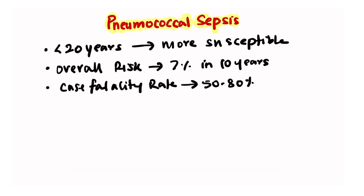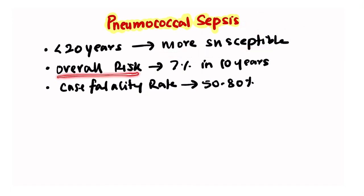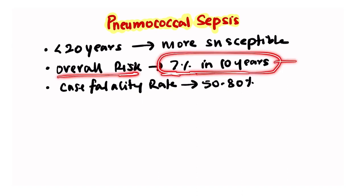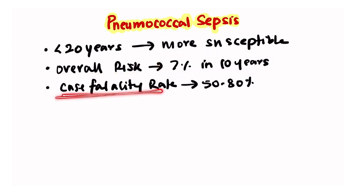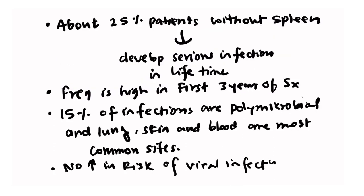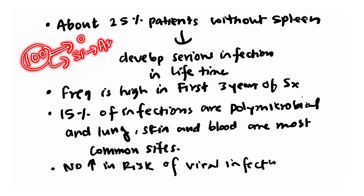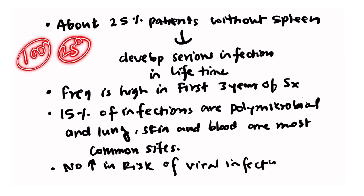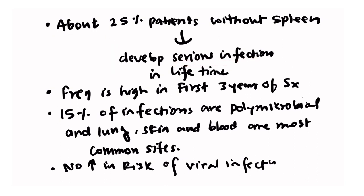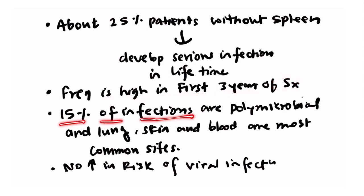Children less than 20 years of age are more susceptible to pneumococcal sepsis, but overall in any age group there is a 7% chance of developing pneumococcal sepsis in 10 years, with a case fatality rate of 50 to 80%. In general, about 25% of patients without a spleen — whether from splenectomy or autosplenectomy as in sickle cell anemia — will develop a serious infection in their lifetime. The frequency is very high in the first three years after splenectomy.